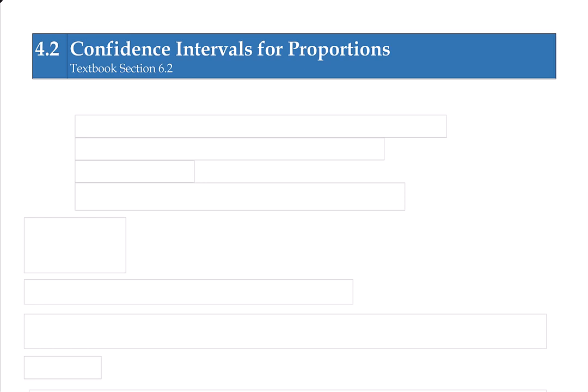In Lesson 4.2, we're going to talk about confidence intervals for proportions. In this section, we will learn how to create confidence intervals for proportions, which essentially is how to create a confidence interval when we're working with qualitative data.